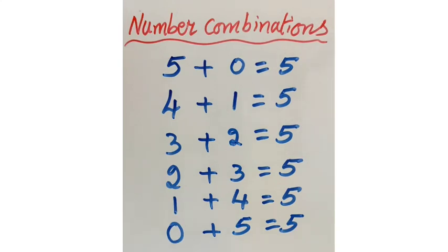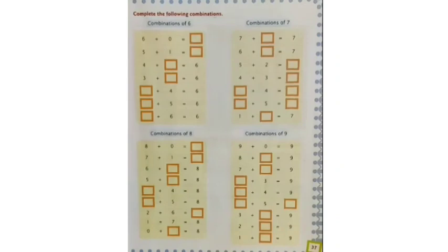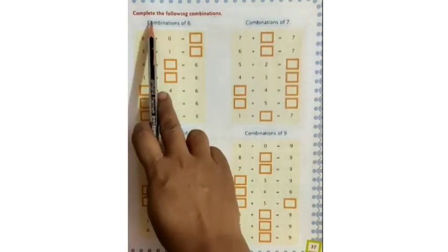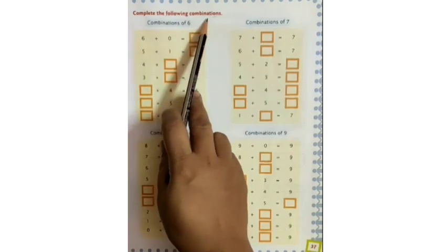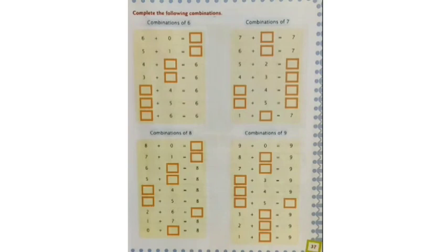Is that clear, children? Did you understand? Yes. Children, all of you open page number 37. In page number 37 you have a heading: complete the following combinations. Till now we have seen how to write down the combinations and we have written till 5. The combination up to 5. Now let us write down the combinations of 6.